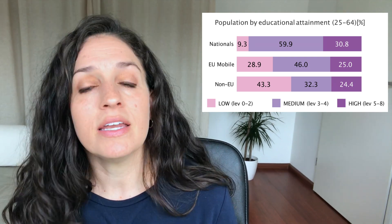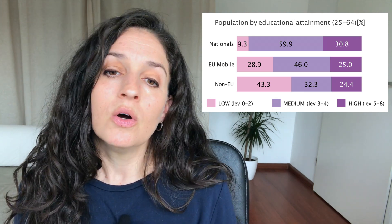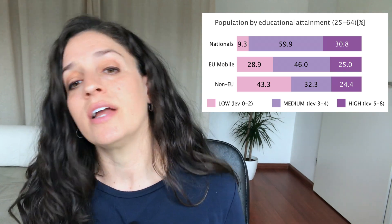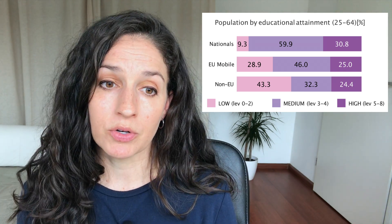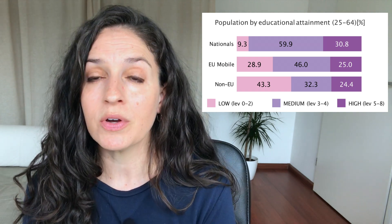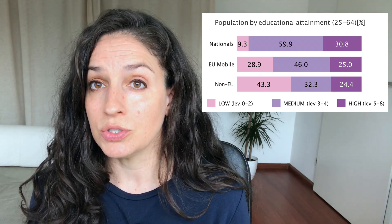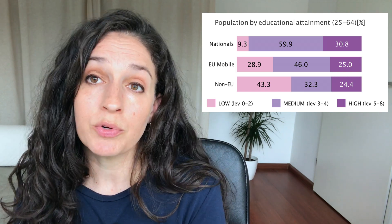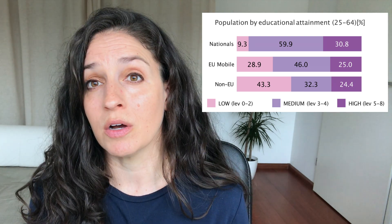Now let's look at educational attainment. Breaking this down by nationals, EU immigrants, and immigrants from outside the EU: there are higher levels of education among German nationals compared to all immigrant groups. EU migrants resemble nationals more closely, while non-EU migrants have the lowest rates of education overall. Still, there is a notable group of highly educated individuals within the non-EU migrant group, alongside a larger group with lower education levels.